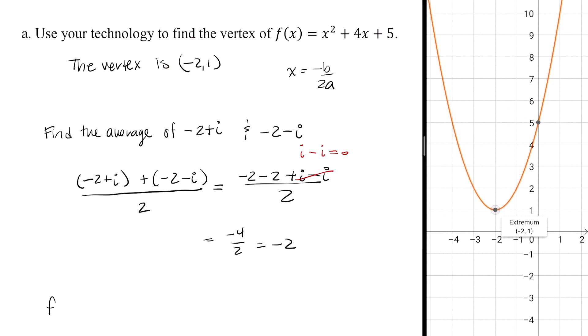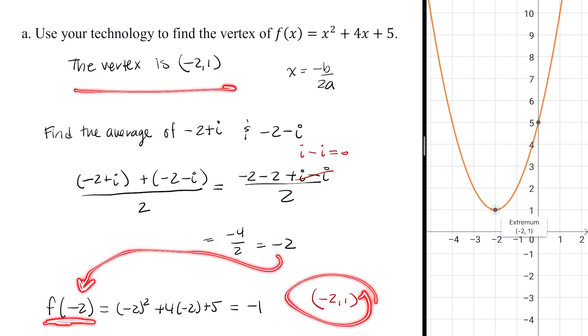To find the y value, evaluate f at negative 2. And you'll notice this comes out to be 1 as well. So we end up with the same vertex, negative 2 comma 1, by first finding the average of the two solutions, evaluating that average in our function, and writing that out as an ordered pair. This is the same vertex we got from technology. I hope this video was helpful.